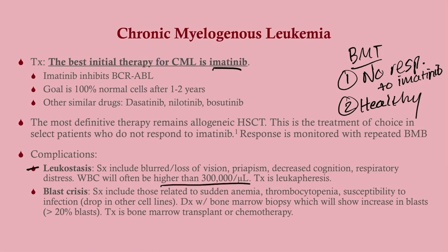Complications include leukostasis — basically sludging due to an immense number of white blood cells, usually higher than 300,000 — which is not super common. Blast crisis essentially moves the picture into an acute leukemia presentation.